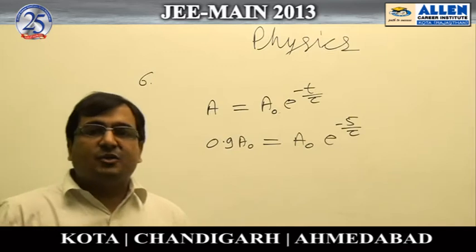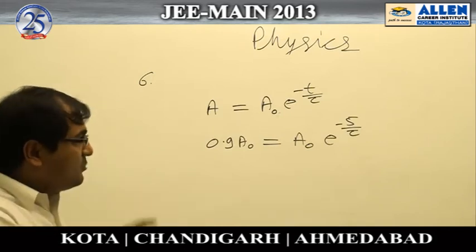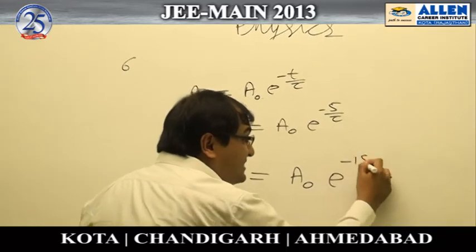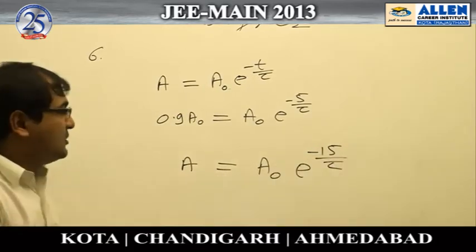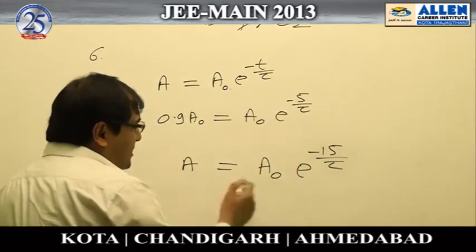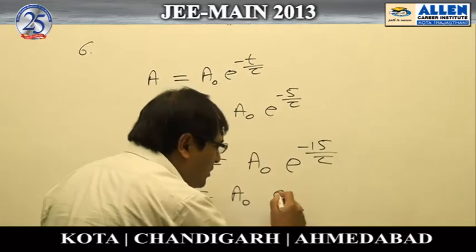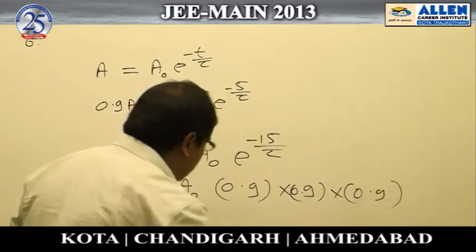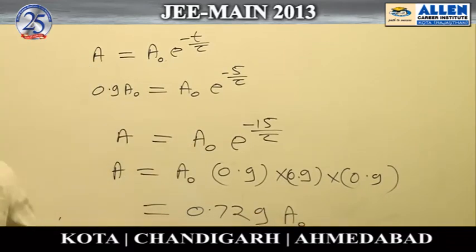The question asks what happens to the amplitude after ten more seconds, which means fifteen seconds from the beginning. Replacing the value of e^(−5/τ) from the above, we get the amplitude as A₀ × 0.9 × 0.9 × 0.9, that is 0.9 cubed. Solving this gives 0.729A, so option number three is correct.